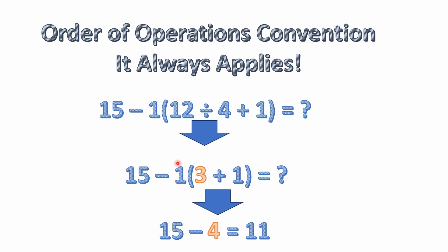This is implied multiplication here. You have 1 times the quantity 3 plus 1. Well, 1 times 4 is just 4. Of course, we have a minus sign out here, which confuses a lot of people. But you're left with 15 minus 4, which equals 11.